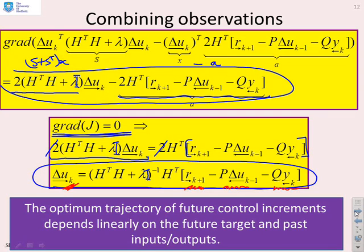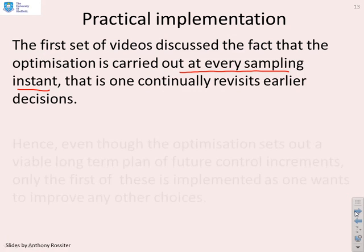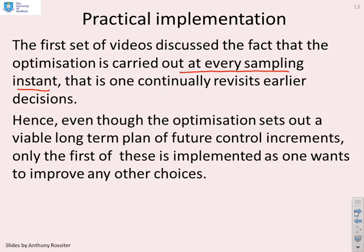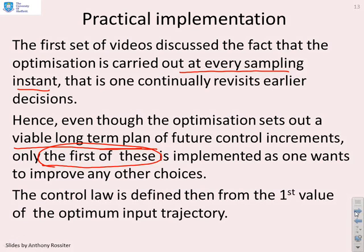Regarding practical implementation: the optimization is carried out at every sampling instant — you continually revisit your earlier decisions and update them. Even though the optimization provides a whole delta_U_future vector representing a long-term plan, only the first value of this vector will actually be implemented. Then at the next sample, the decisions are updated.